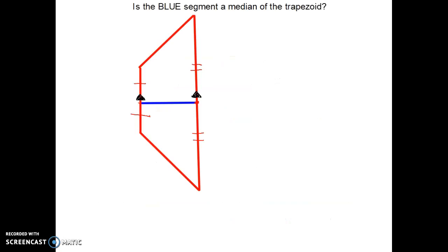Is the blue segment a median of the trapezoid? The endpoints are at the middles of each of these sides. However, this is not a median. The endpoints of medians have to be on the non-parallel sides. They can't be on the two sides that are parallel.